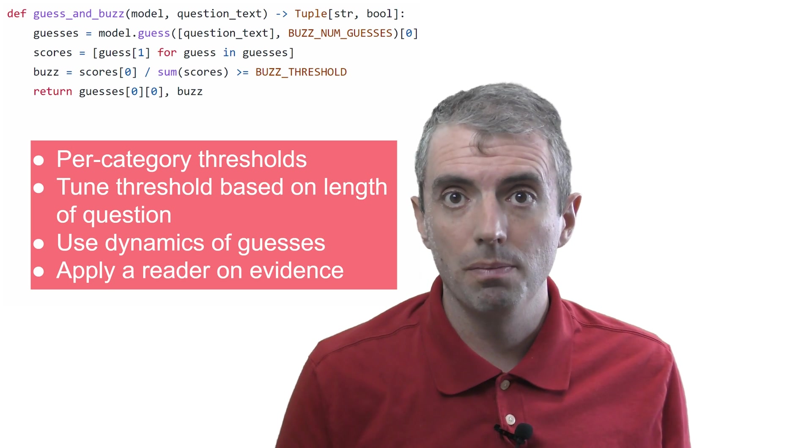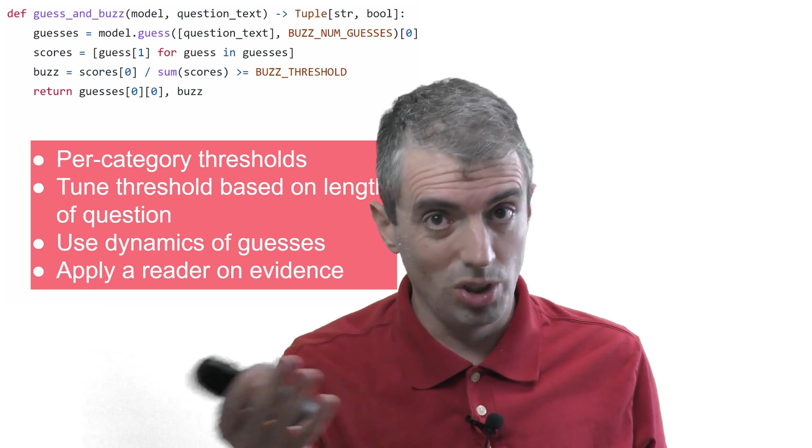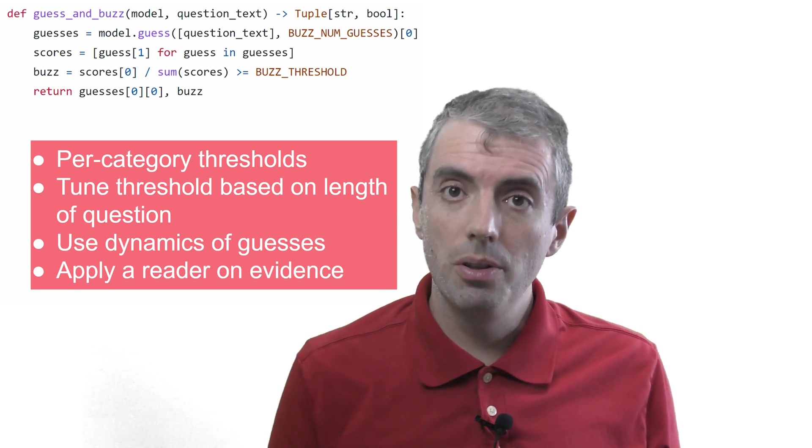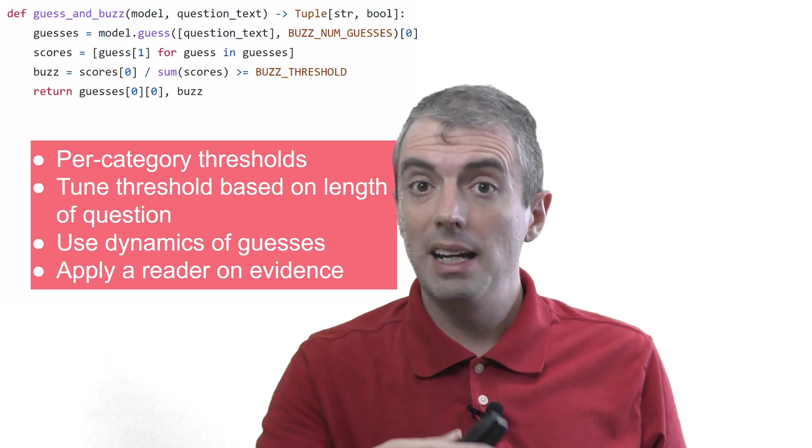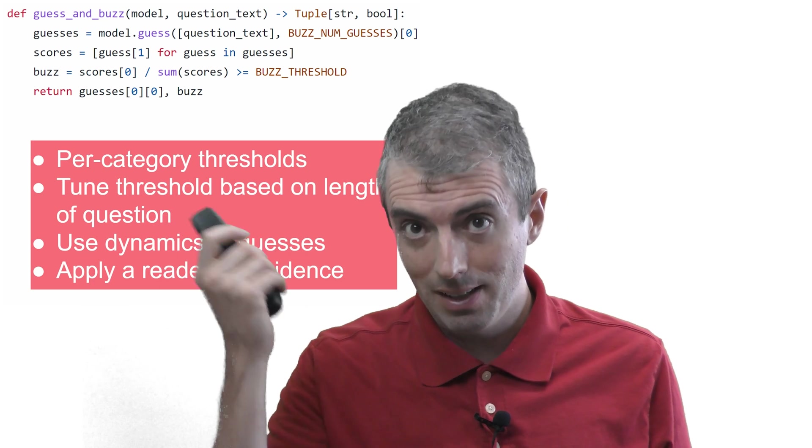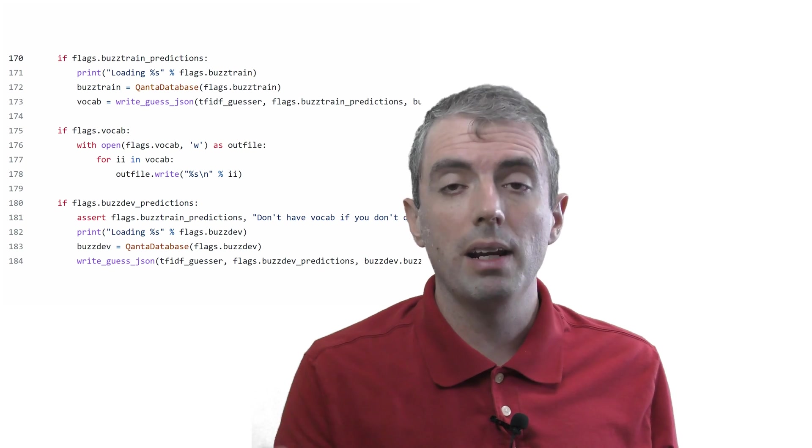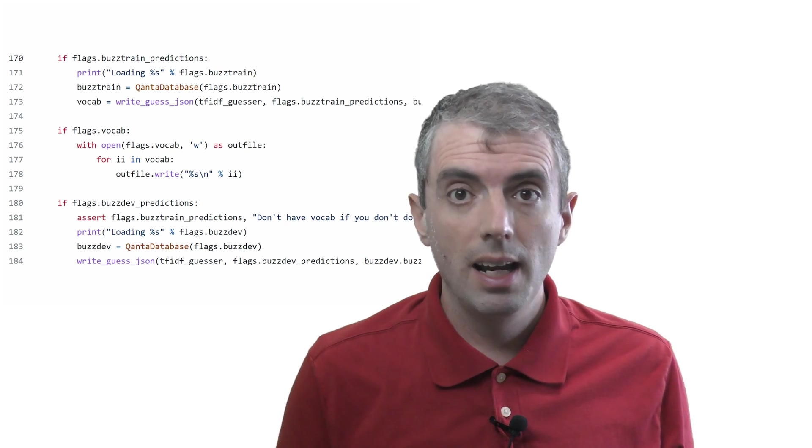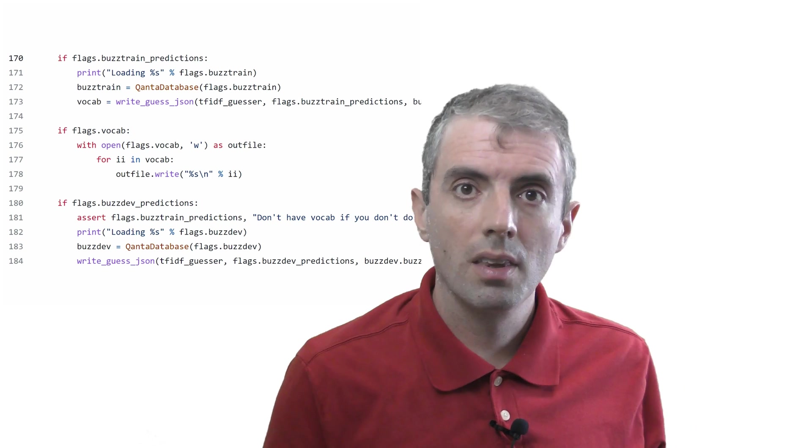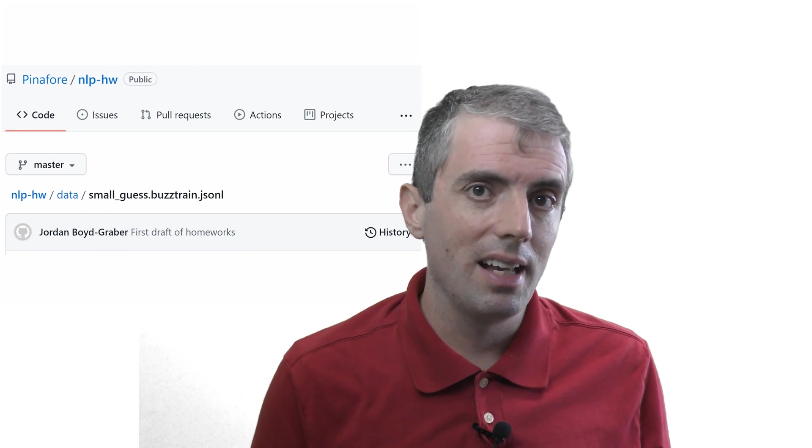This gets generated by your guesser. And we have code to generate training data for your buzzer in tfidfguesser.py. And when you're training your buzzer, instead of just using some silly threshold, you could do things like per-category threshold, or tune the threshold based on the length of the question, or use the dynamics of the guesses, how the guesses change as you get more information, or look at the constellation of guesses like we saw in the Abraham Lincoln example. Here's the code that actually generates guesses from whatever the guesser in tfidfguesser is.